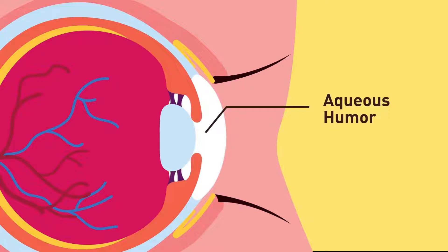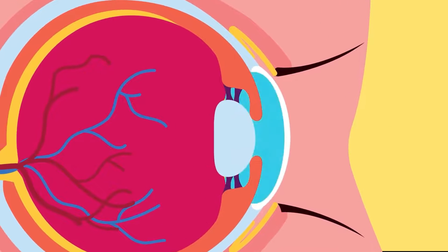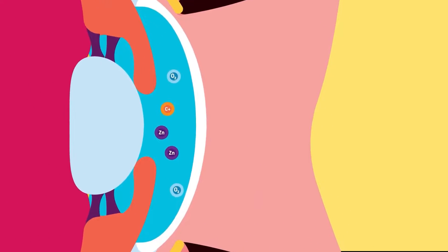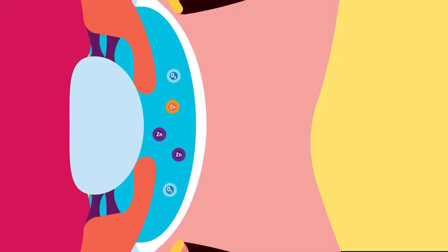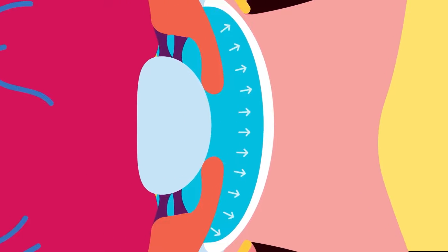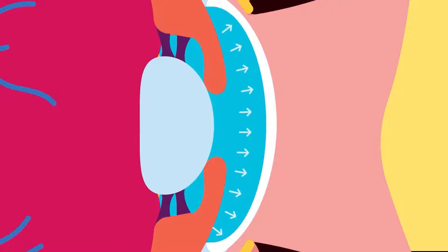The aqueous humor is a transparent, watery liquid in the anterior cavity. It has two main functions: it is a medium for diffusion of oxygen and nutrients, and secondly, it refracts light and maintains the shape of the eyeball.